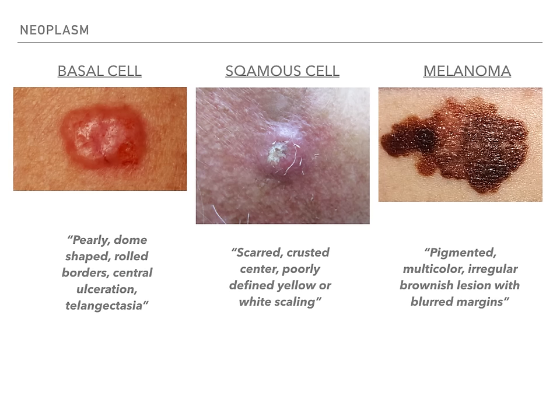Melanoma is going to look like a pigmented, multicolored, irregular brownish lesion with blurred margins. You'll see really dark brown in one spot and lighter brown elsewhere, but it's asymmetric — the colors are different, the size is different, and some areas are more raised than others. It's basically a freckle that's gone bad.